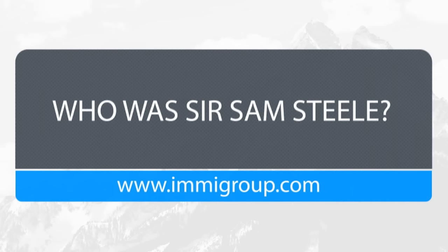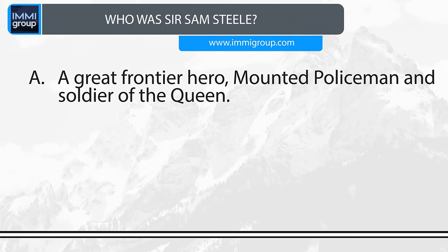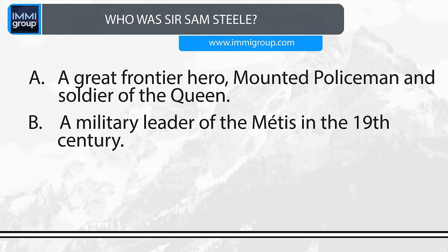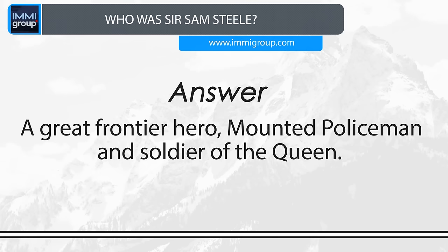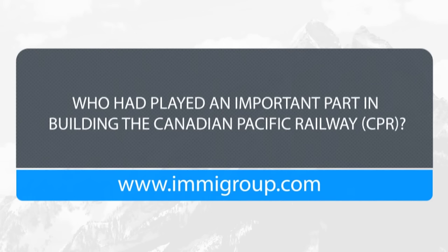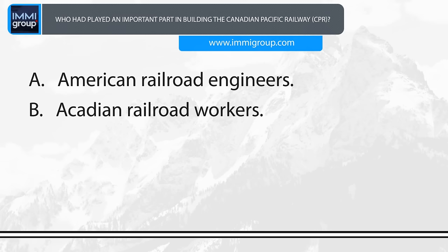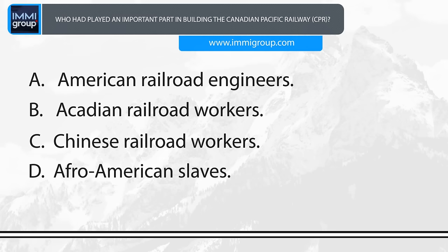Who was Sir Sam Steele? A. A great frontier hero, mounted policeman and soldier of the Queen. B. A military leader of the Métis in the 19th century. C. The first Prime Minister of Canada. D. The father of Manitoba. Answer: A great frontier hero, mounted policeman and soldier of the Queen. Who played an important part in building the Canadian Pacific Railway? A. American railroad engineers. B. Acadian railroad workers. C. Chinese railroad workers. D. Afro-American slaves. Answer: Chinese railroad workers.